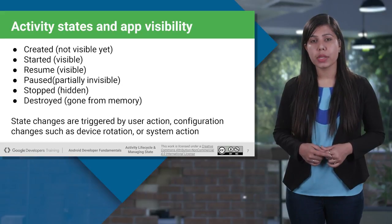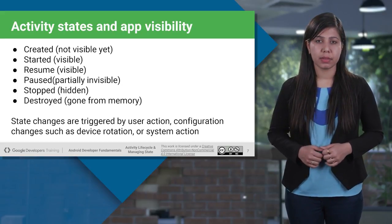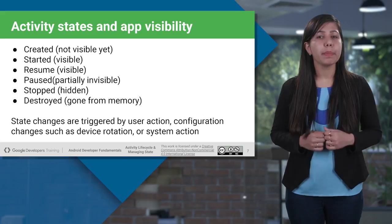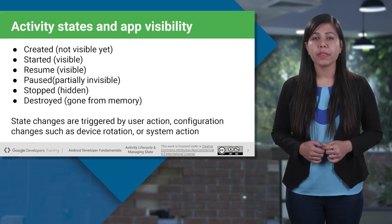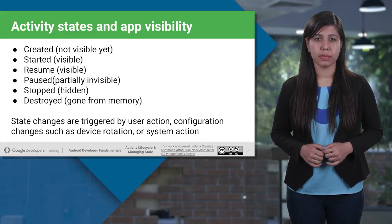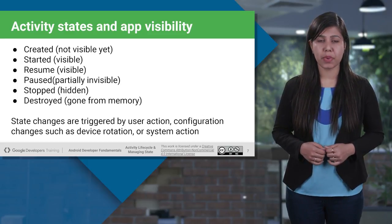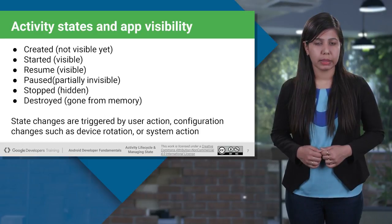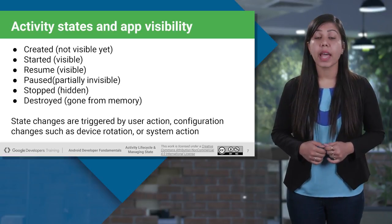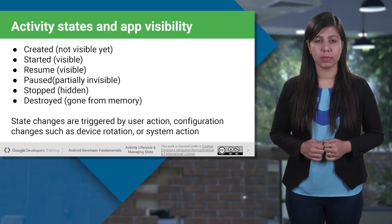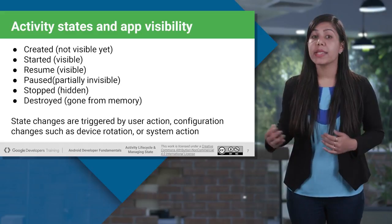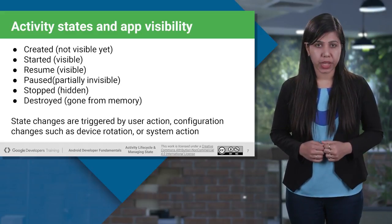For example, if a user clicks a button that launches another activity, it may go into a pause state. But if a user hits the home button, the activity completely exits — it's no longer visible, no longer on the stack, and is in the stop state. When the operating system needs memory back, it enters the destroy state and completely shuts down the activity. Activity states are changed by user action, configuration changes such as device rotation, or system action.